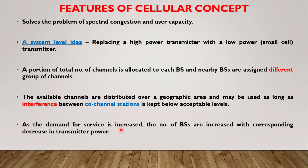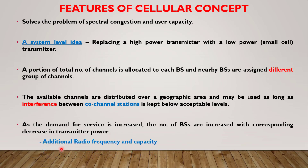As the demand for service increases, the number of base stations is increased with a corresponding decrease in transmission power. When we have to accommodate more users, we install more number of smaller antennas in order to reuse the same channels in different cells after providing sufficient gap between the two cells. This increases capacity but results in a decrease in transmission power because we have to avoid interference. These are some features of the cellular system, and this approach gives you additional radio frequency and increased capacity.